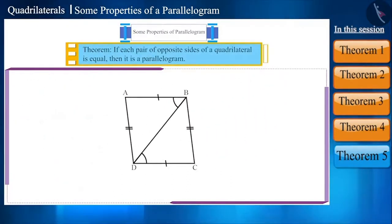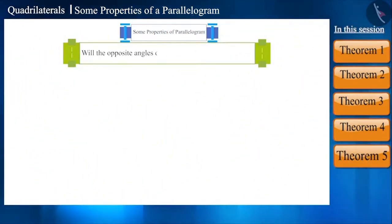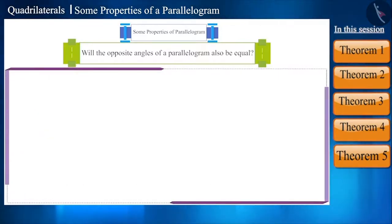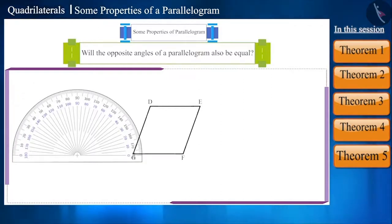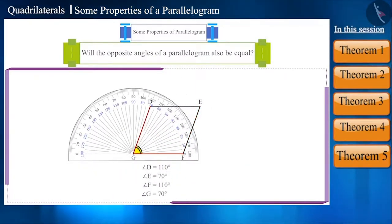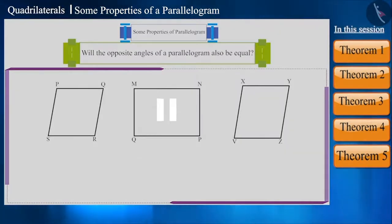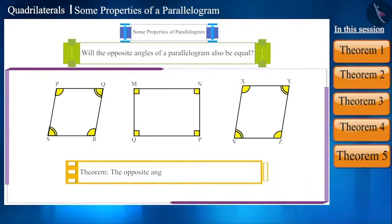We obtained this result for opposite sides. Can we say something about the opposite angles of a parallelogram? Like the opposite sides, will the pair of opposite angles also be equal? Let's check by drawing parallelogram DEFG and using a protractor to find the measure of its opposite angles. You will see that the measure of angle D and angle F is equal, and the measure of angle E and angle G is also equal. You can repeat this activity for other parallelograms and conclude that the opposite angles of all parallelograms are equal. This is another property of a parallelogram.